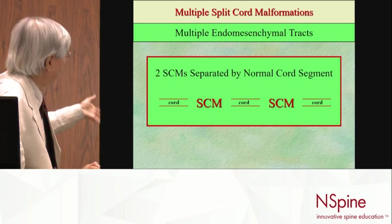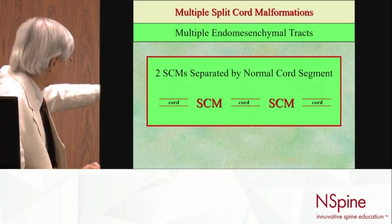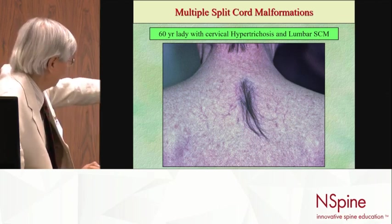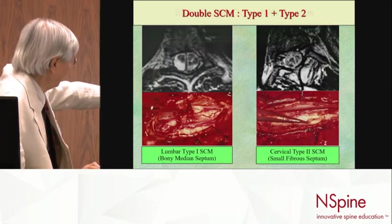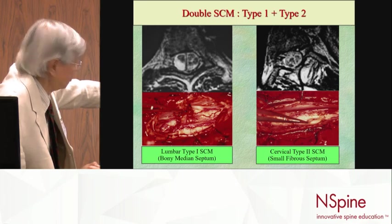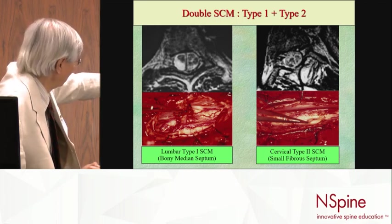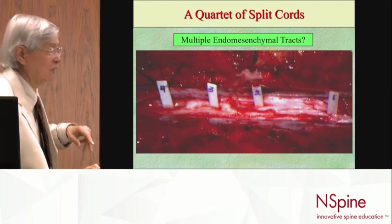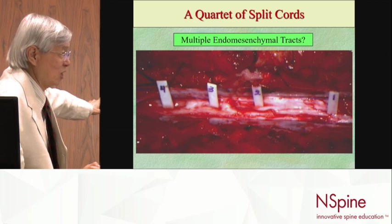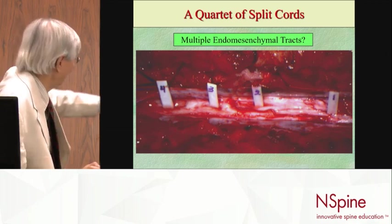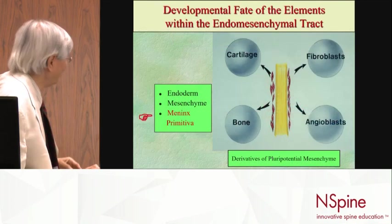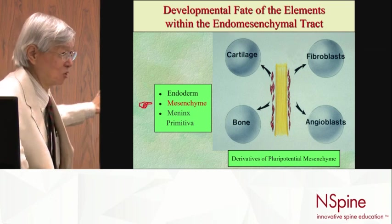We have seen multiple splits. A 60-year-old woman presented with a lumbar type 1 and a type 2 in the neck — two split cord malformations in one patient. The largest number I have ever seen is four split cord malformations in a single spinal cord — a quartet of splits, four spikes. So it can occur in multiple levels.